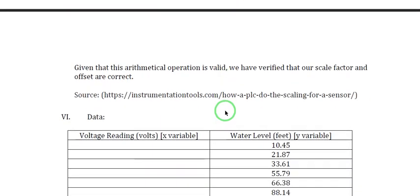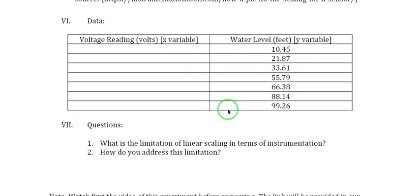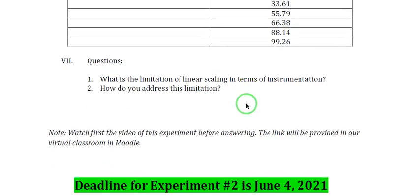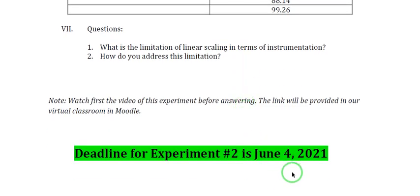So this is now our table. This is your requirements. You complete this table using the slope intercept form, using the formula. And you answer the following questions. And you submit it on or before June 4.